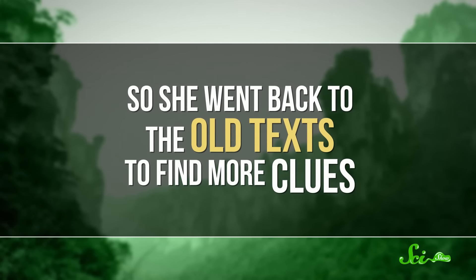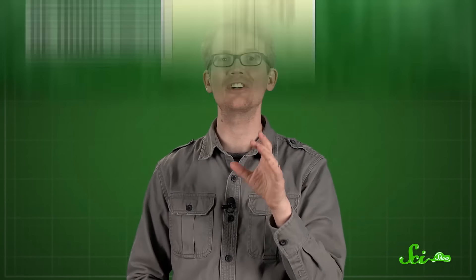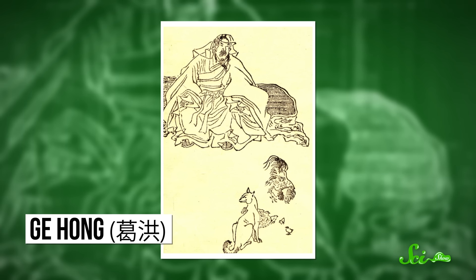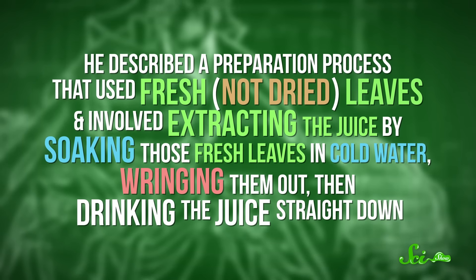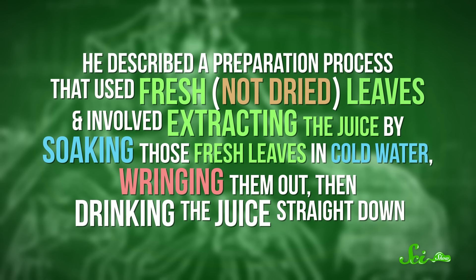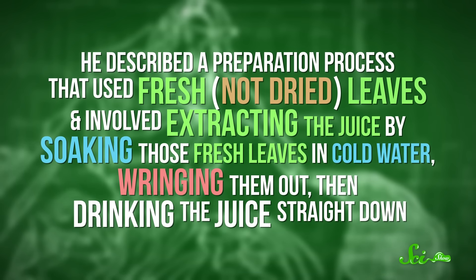So she went back to the old texts to find more clues. Most of the remedies suggested processing dried leaves with boiling water. But Chinese philosopher Ge Hong, writing in the year 340 CE, had a different suggestion. He described a preparation process that used fresh, not dried leaves, and involved extracting the juice by soaking those fresh leaves in cold water, wringing them out, and drinking the juice straight down. Based on this account, the team developed their own extraction method using ether, and then tested it out on mice, monkeys, and finally, people. And it worked!